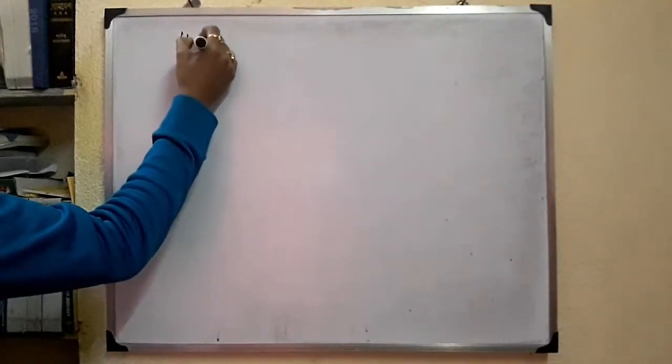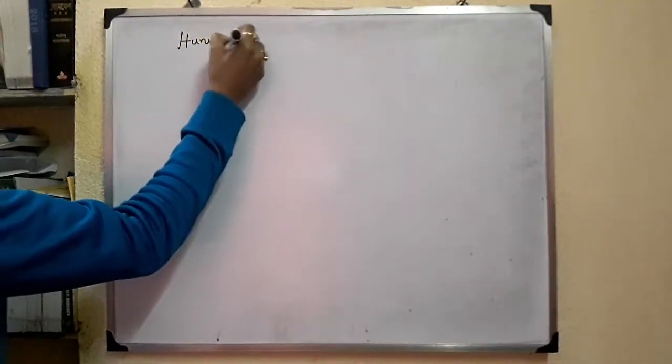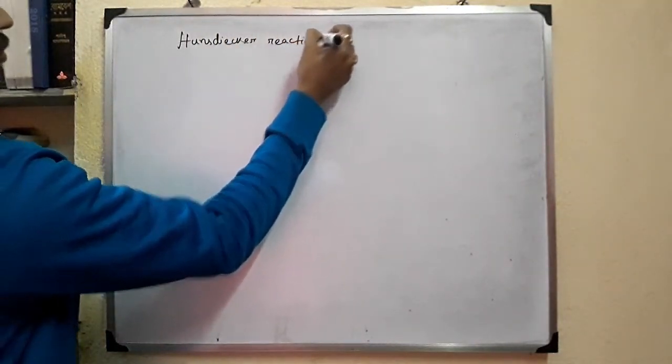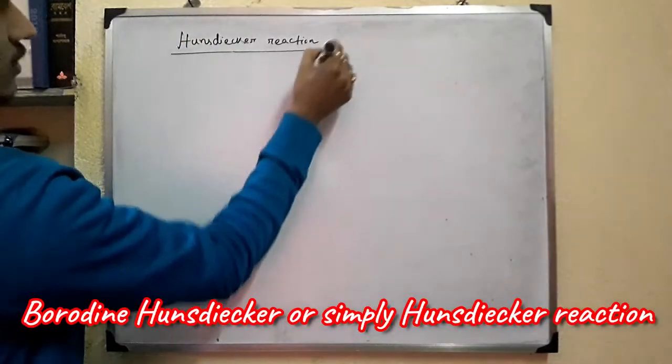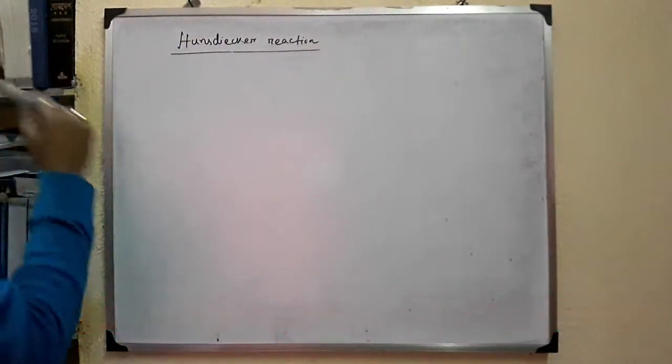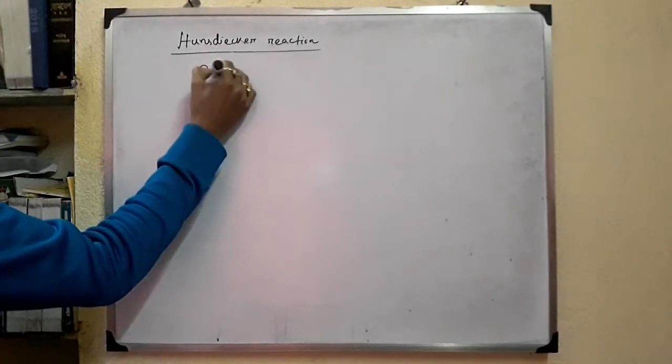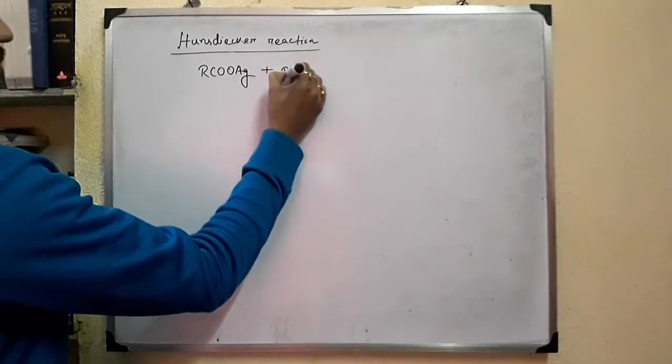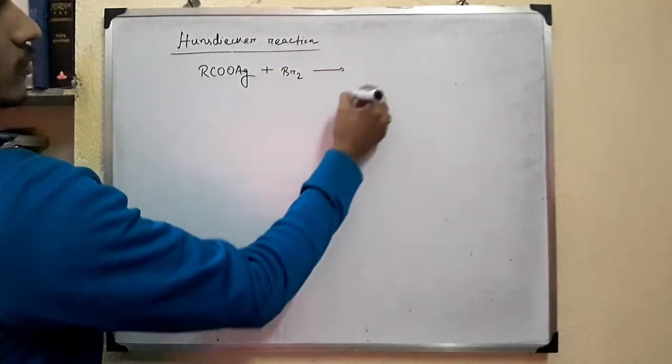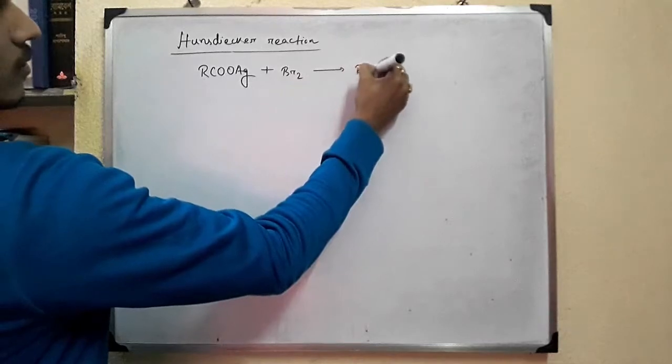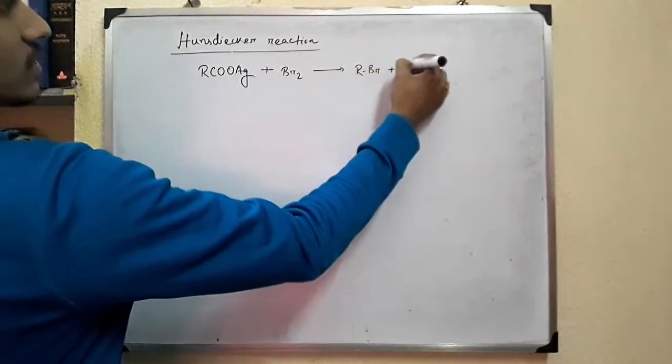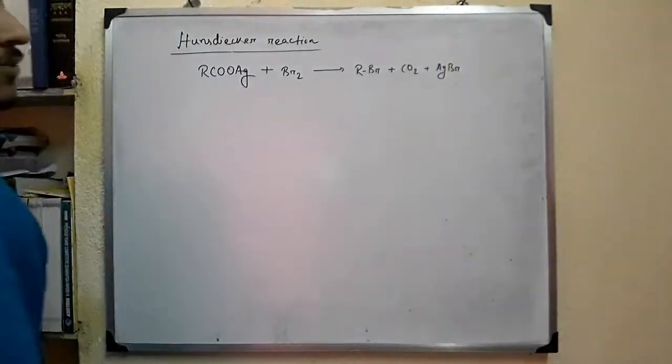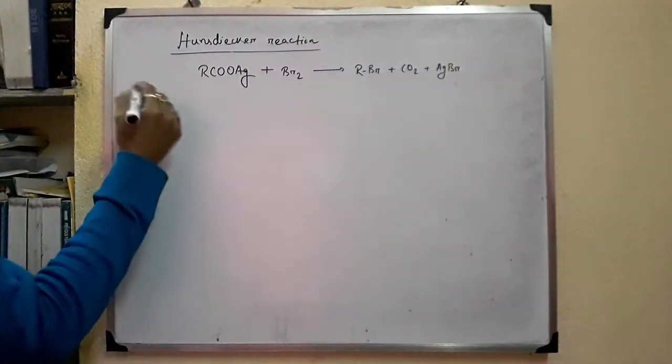In this video let us discuss the Hunsdiecker reaction which is also known as Borodine Hunsdiecker reaction. This is a reaction of silver salt of carboxylic acid with bromine to form bromoalkane plus CO2 plus AgBr silver bromide.